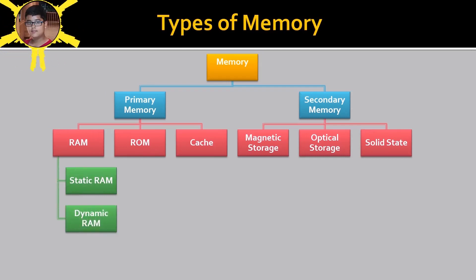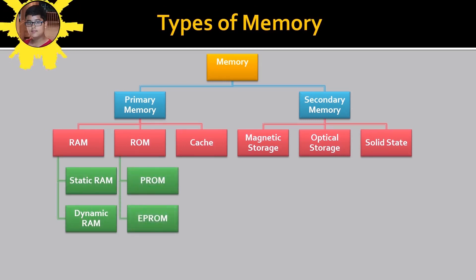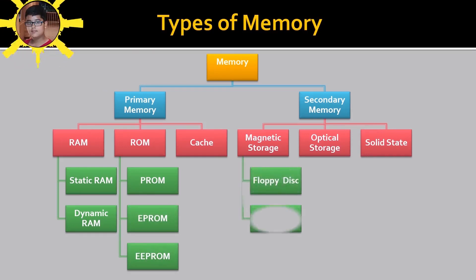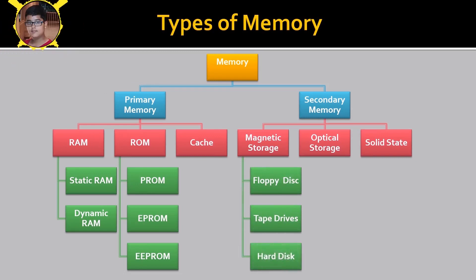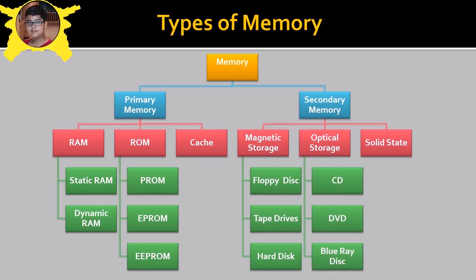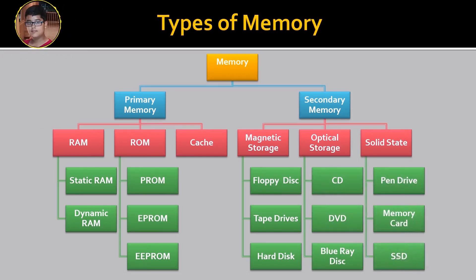RAM may be static RAM or dynamic RAM. ROM may be PROM, EPROM, or EEPROM. Magnetic storage includes floppy disk, tape drives, and hard disk. Optical storage includes CD, DVD, and Blu-ray disk. Solid state storage includes pen drive, memory card, and SSD.